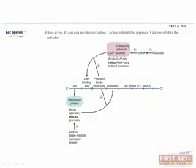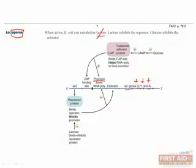The lac operon is a classic example from E. coli that we can use to understand the regulation of gene expression. An operon is a group of genes and the promoter that regulates them in bacteria. In this case, the genes being regulated are lacZ, Y, and A, which are all needed to metabolize lactose. When lactose is available, E. coli should produce the genes needed to metabolize it, but when it's not available, there's no point in making these enzymes. Also, if glucose is present at a high concentration, the cell would rather use glucose than lactose, since lactose is a disaccharide composed of glucose and galactose, so the first part of lactose metabolism just produces glucose anyway.